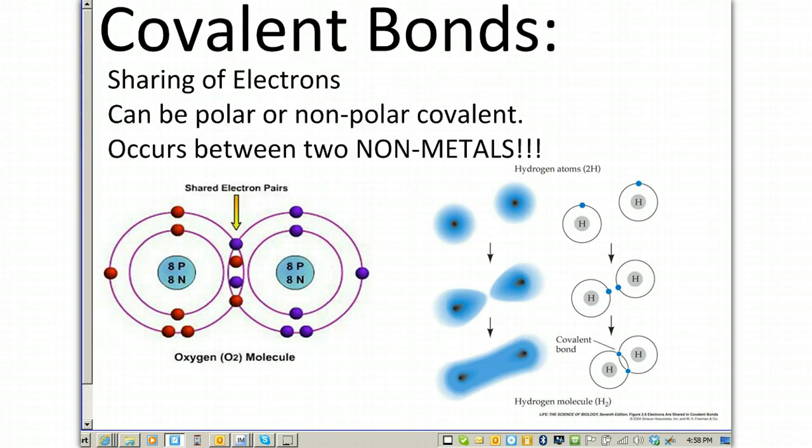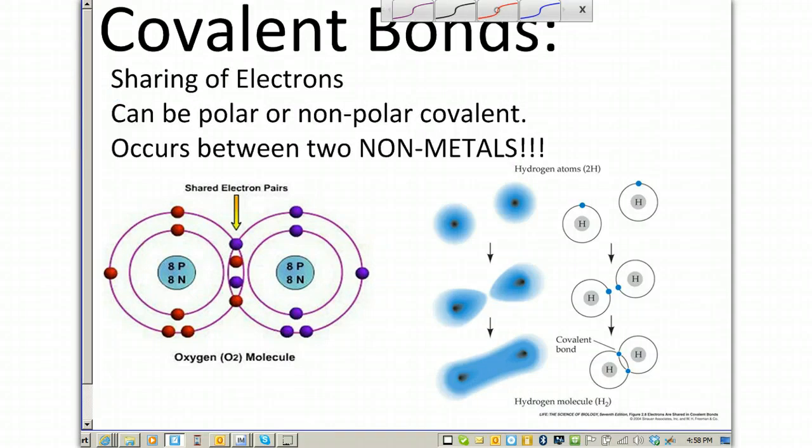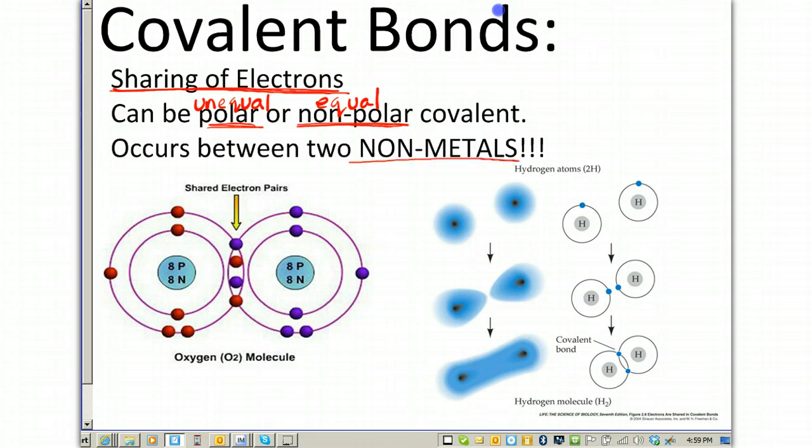So a covalent bond occurs when there is a sharing of electrons. This is the key to distinguish it from an ionic compound. It can be polar, which means there's an unequal sharing of the electrons, or it can be non-polar, which means there's an equal sharing of the electrons. And it's also important to realize that covalent bonds occur between two or more non-metals only, so no metal is present in a covalent bond.